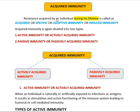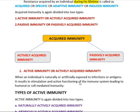The resistance acquired by an individual during his lifetime is called acquired immunity. Its synonyms are specific immunity, adaptive immunity, or induced immunity. This acquired immunity is classified into two types: actively acquired immunity and passively acquired immunity.